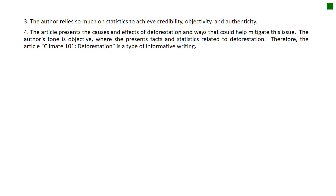Number three: why does the author rely so much on statistics? There is one answer: the author relies so much on statistics to achieve credibility, objectivity, and authenticity. Number four: what type of writing does the article belong to? The article presents the causes and effects of deforestation and ways that could help mitigate this issue. The author's tone is objective, presenting facts and statistics related to deforestation. Therefore, the article 'Climate 101 Deforestation' is a type of informative writing.